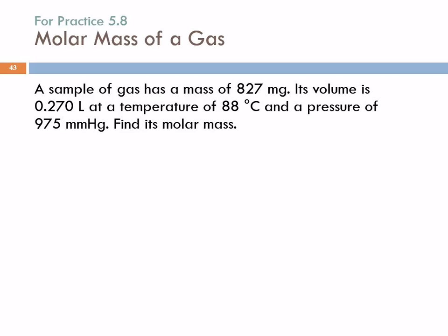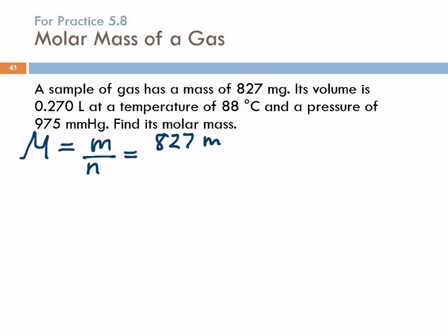I approach this the same way as the density problem. Molar mass is mass divided by moles. The mass was given as 827 milligrams — I need grams, so I write this as 827 × 10⁻³ grams. Now I need n. Using PV = nRT, n = PV / RT. Convert pressure: 975 mmHg × (1 atm / 760 mmHg). And volume was given in liters as 0.270 liters.